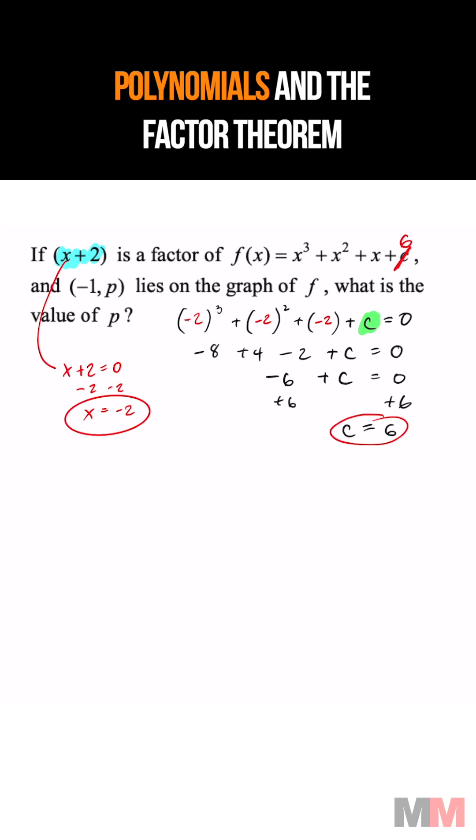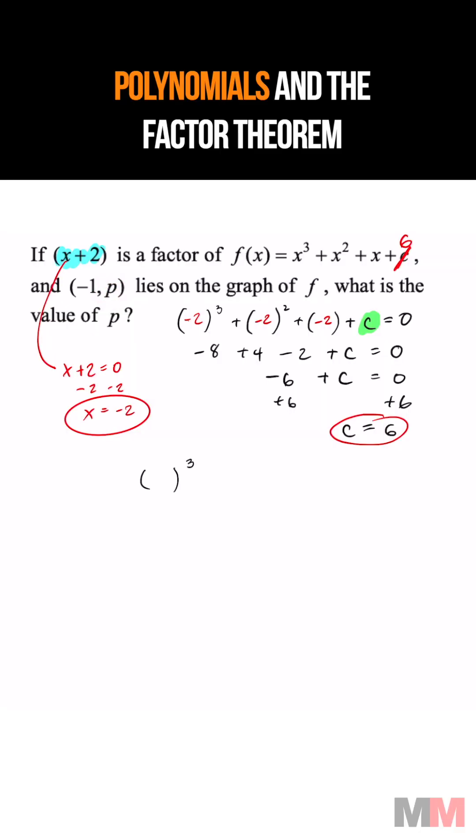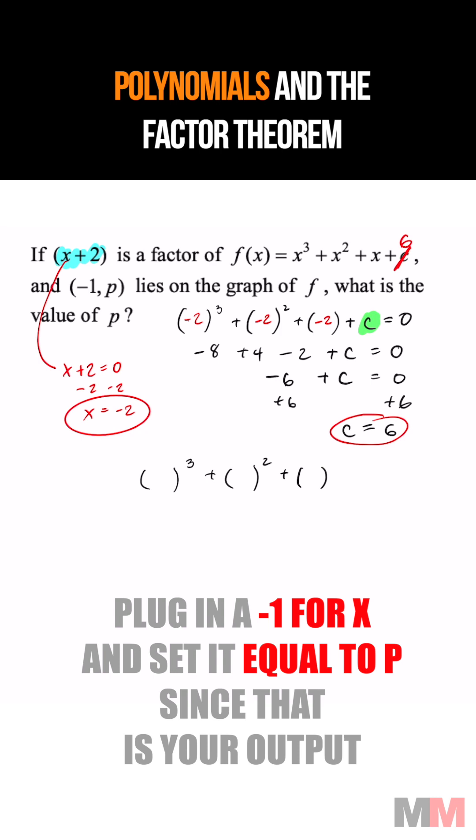Now that I know that, I'm going to use this information where this is going to be another x value, and your y coordinate is just your output. So we got to plug that in once again, except now we got a different x value, and we got the letter c.